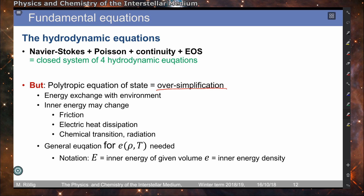This is for a variety of reasons. First of all, the assumption of an adiabatic process does not hold in the interstellar medium — we have energy exchange with the environment. As a result, the internal energy may change because we have friction with the neighborhood, through the motion of other fluid elements. We can introduce additional energy into our system.